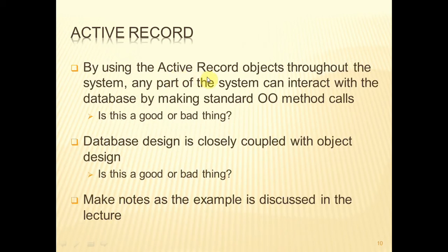By using Active Record objects throughout the system we could potentially use those as the data transfer objects, because they already hold all the data for a given row and we could just pass that over to a servlet — not just the model servlet, but the model servlet could then pass it on to the view servlet. What we really need to ask ourselves is: is that a good thing? Because what's happening is that we are now making the database design much more closely coupled with object design.